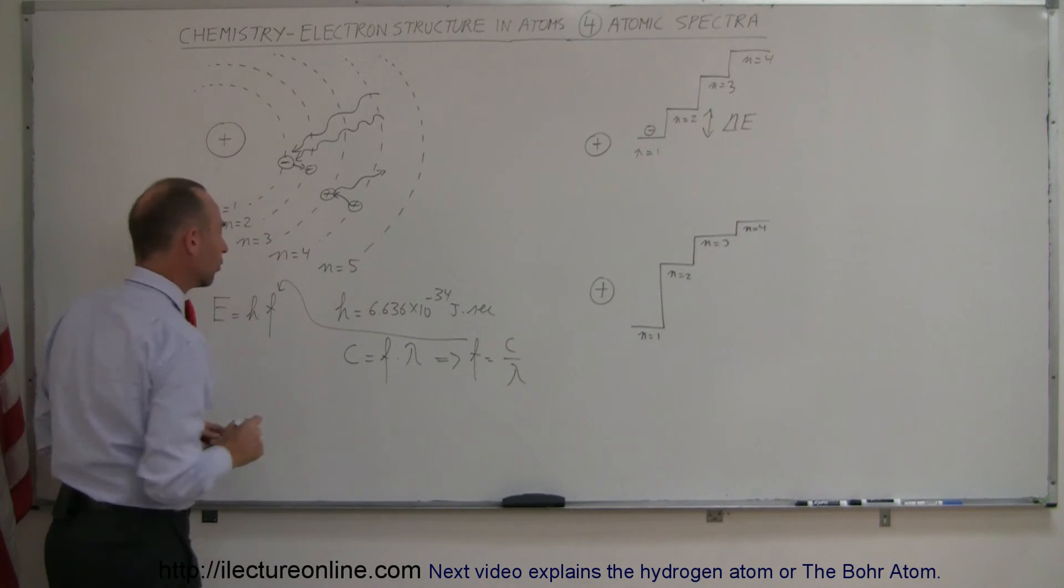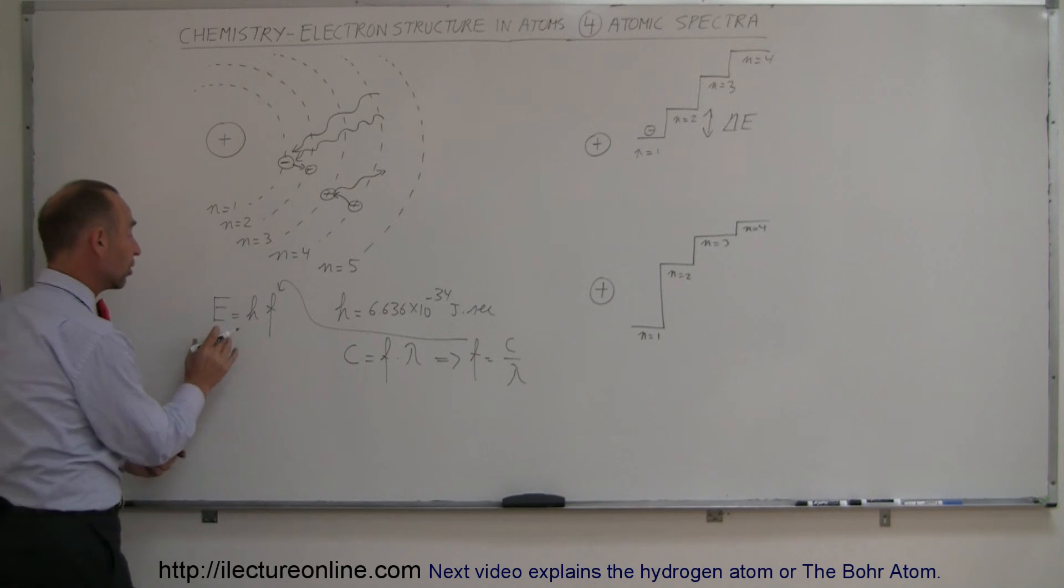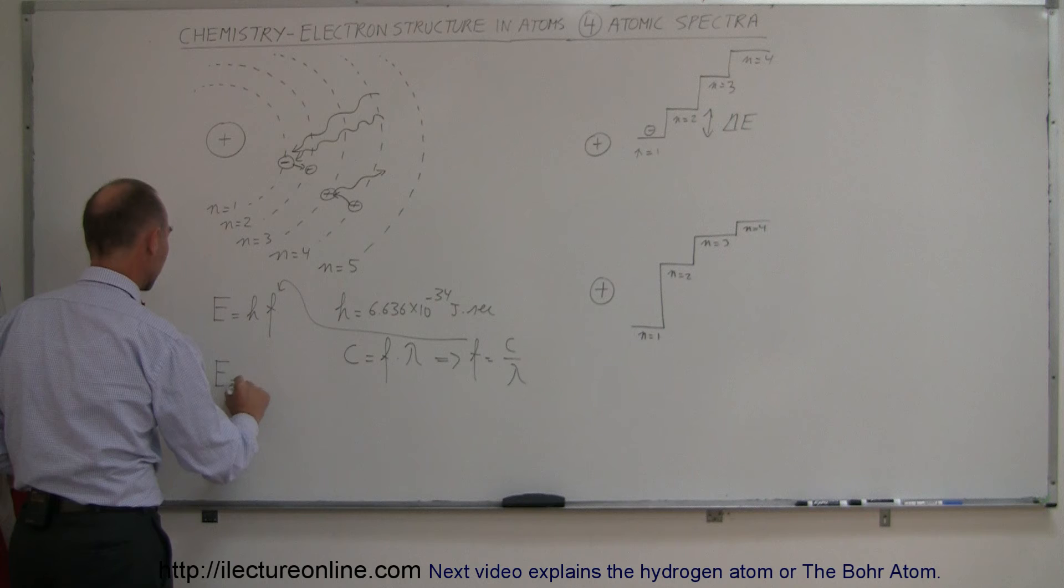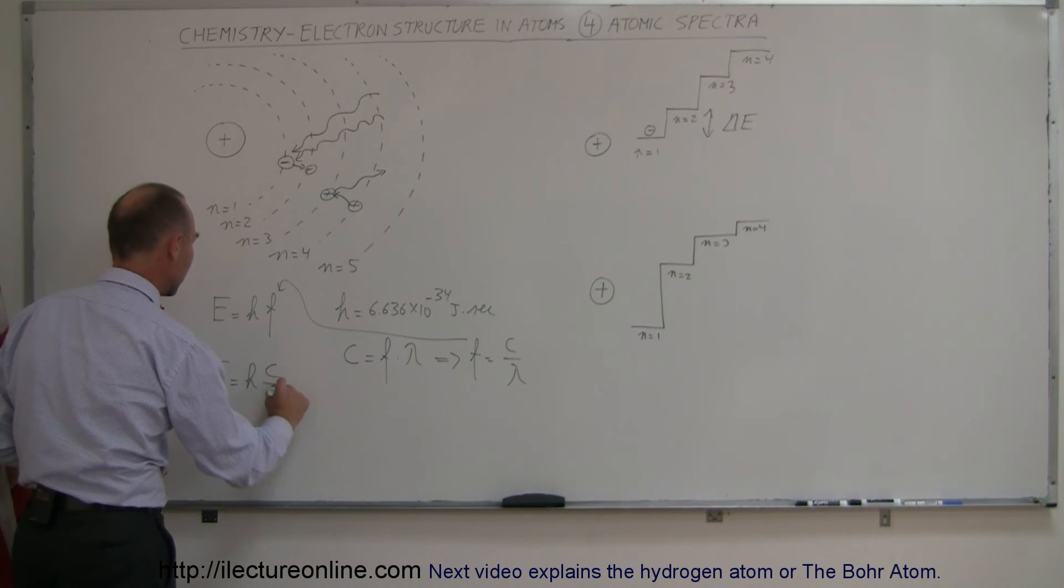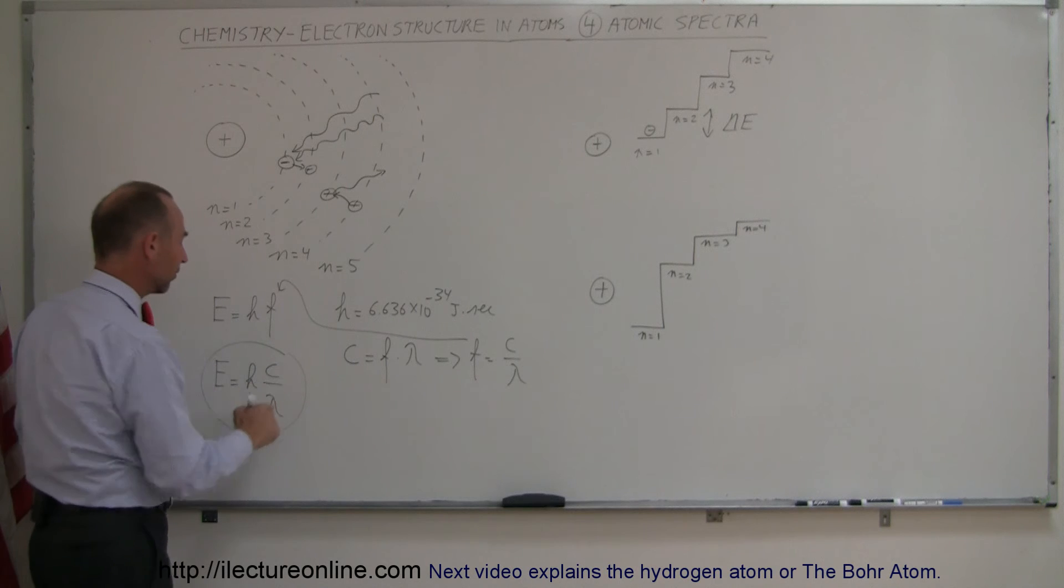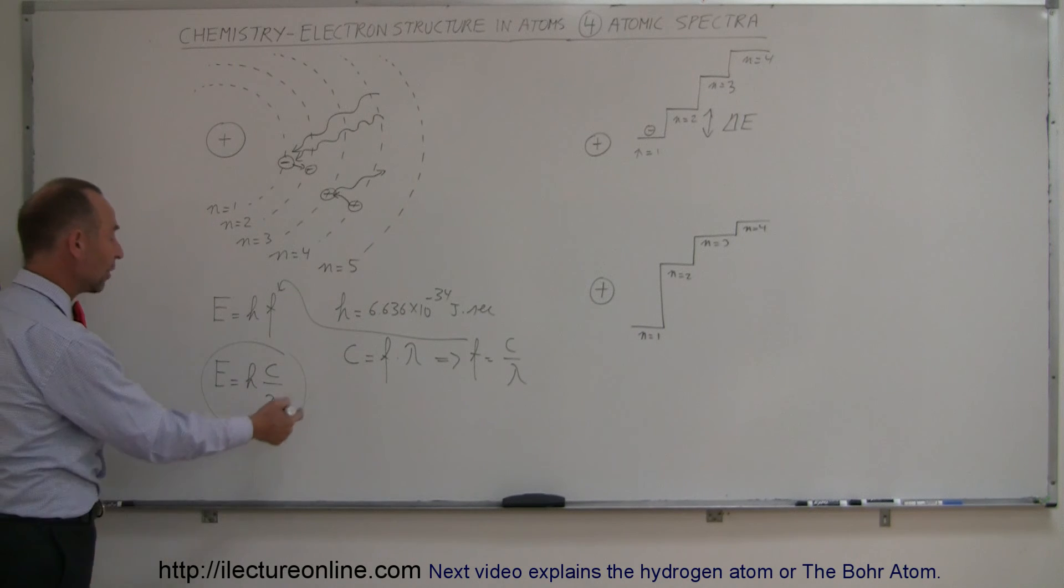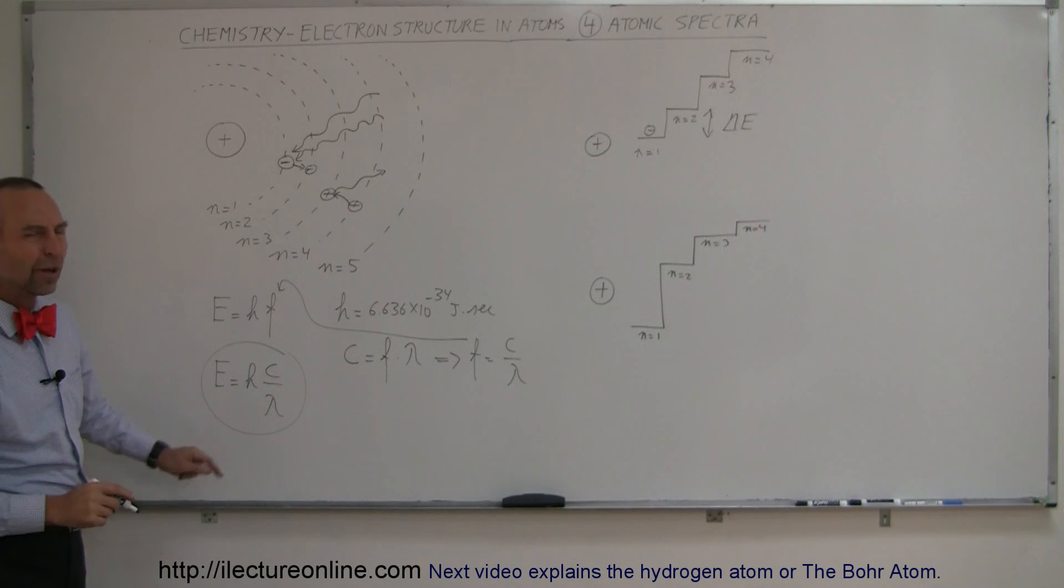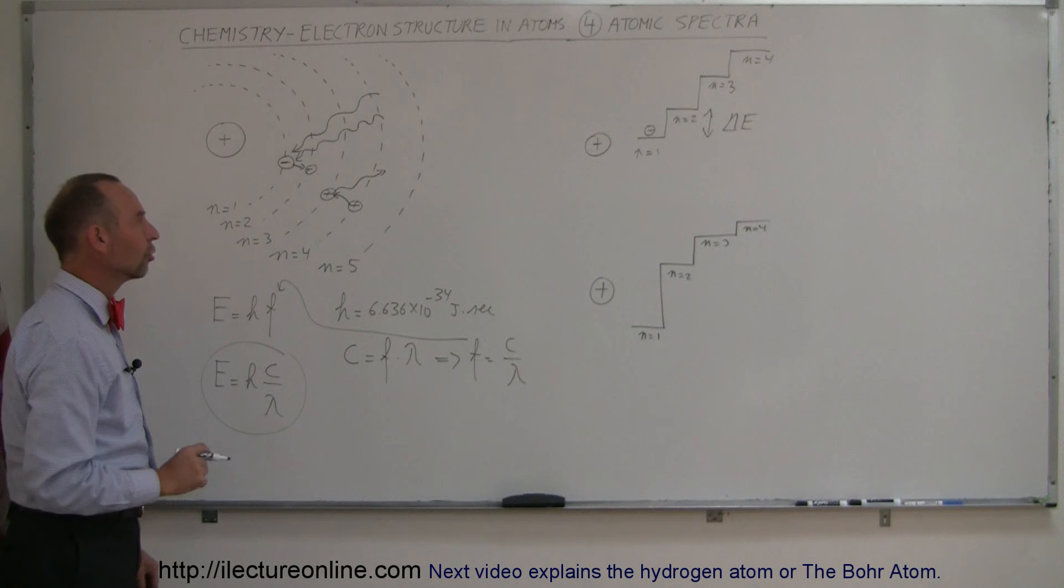And we can plug that back into this equation. So, instead of writing the energy contained in the photon as H times F, we can say that the energy contained in the photon is equal to H times C over lambda. So, if we know the wavelength and we know the speed of light, we know Planck's constant, we can figure out the energy of a single photon using this equation as well. This equation is quite often the most common or the most practical equation to use.